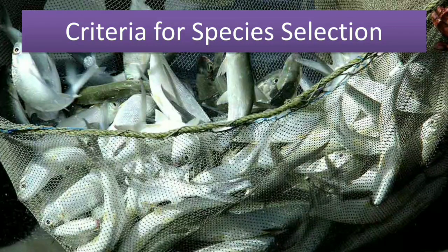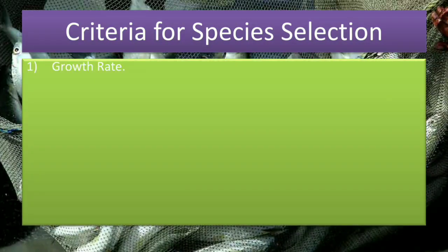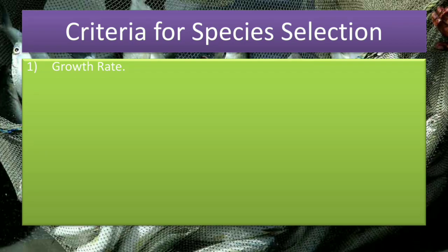So first is criteria for species selection — what criteria do we need to take for selecting our species for aquaculture. The first criteria is growth rate. Species which grow very fast to a very big size in a short period of time are selected — for example, the Indian major carp. Growth rate is the first thing we look for when selecting any species.